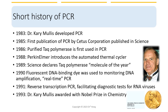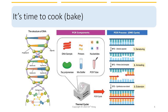It wasn't until 1988 for the industry to introduce the first automated thermocycler. In 1990, fluorescent DNA binding dye was used to monitor DNA amplification, so it was called real-time PCR. A year later, another variant, reverse transcription PCR, was developed to identify RNA viruses. The PCR technology is so widely used and has made a profound impact on the scientific community, so Dr. Mullis was awarded the Nobel Prize in Chemistry in 1993.